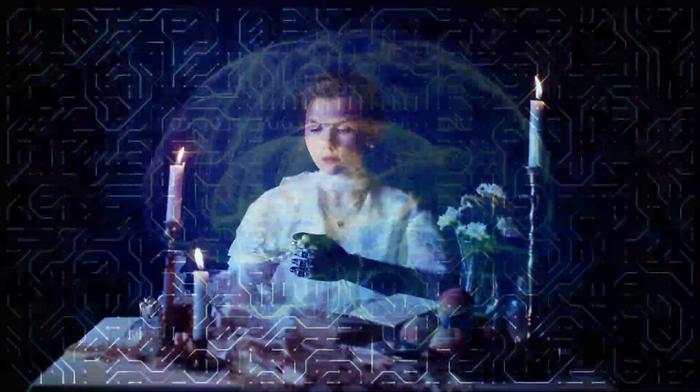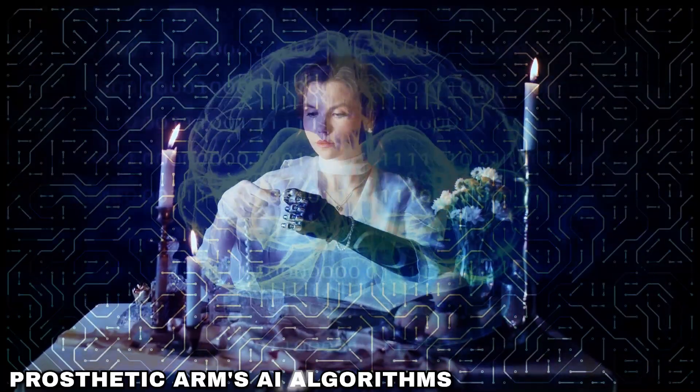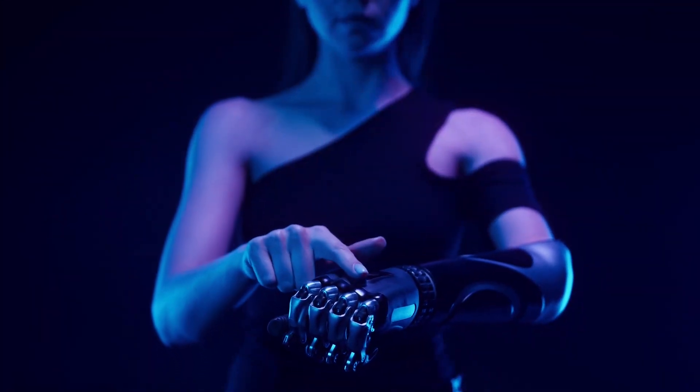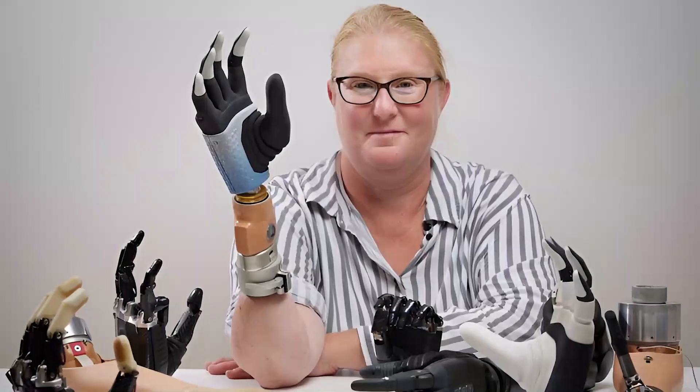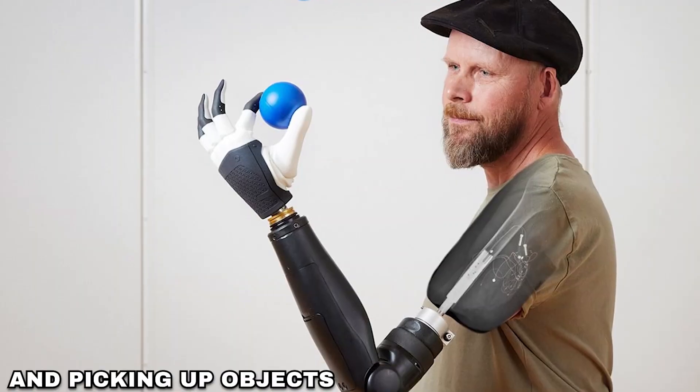Your brain's electrical activity is analyzed by the prosthetic arm's AI algorithms, which then translate your intents into intricate motions. This Bionic Arm can perform everything with ease and grace, including waving hello, thumbs up, and picking up objects.